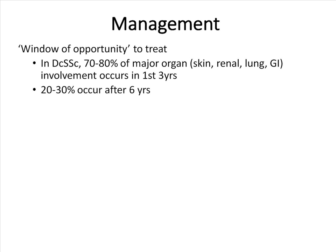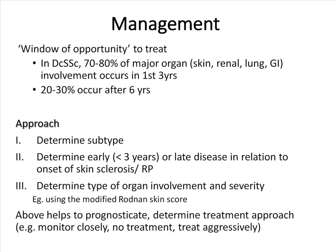Regarding management, there is a window of opportunity to treat patients — especially the diffuse cutaneous subtype — whereby 70 to 80% of major organ involvement occurs in the first three years of disease; 20 to 30% of organ involvement occurs thereafter. The approach is to first determine the subtype, then determine whether they have early or late disease in relation to the onset of skin sclerosis and Raynaud's phenomenon, and finally to determine the type and severity of organ involvement. The modified Rodnan skin score is very useful for this purpose.